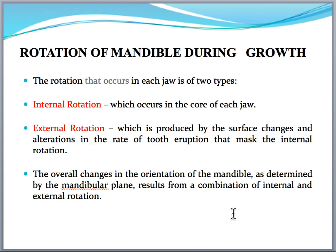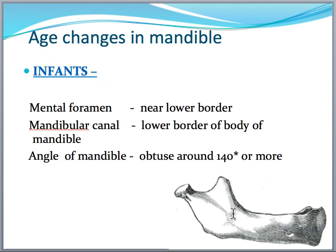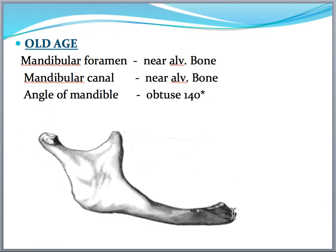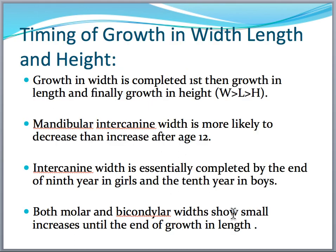Next, the rotation of the mandible during growth — already discussed in the growth rotations video. For a 20-marks question, include the rotations of the mandible. Then cover age changes in the mandible: in infants, describe the position of the mental foramen, mandibular canal, and angle of the mandible. The mandibular canal is considered a more stable point, so mention how it changes from infant to adult, and what changes are present in old age.